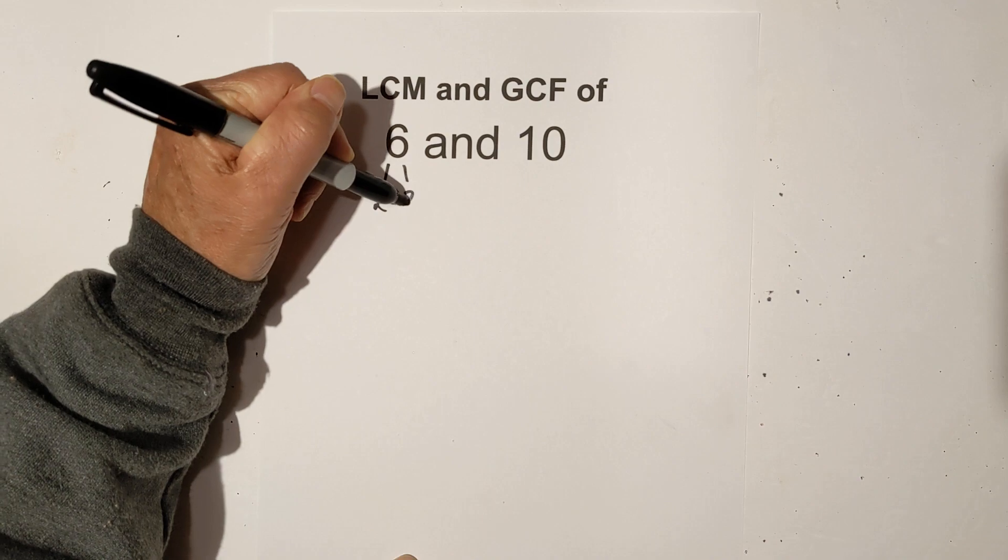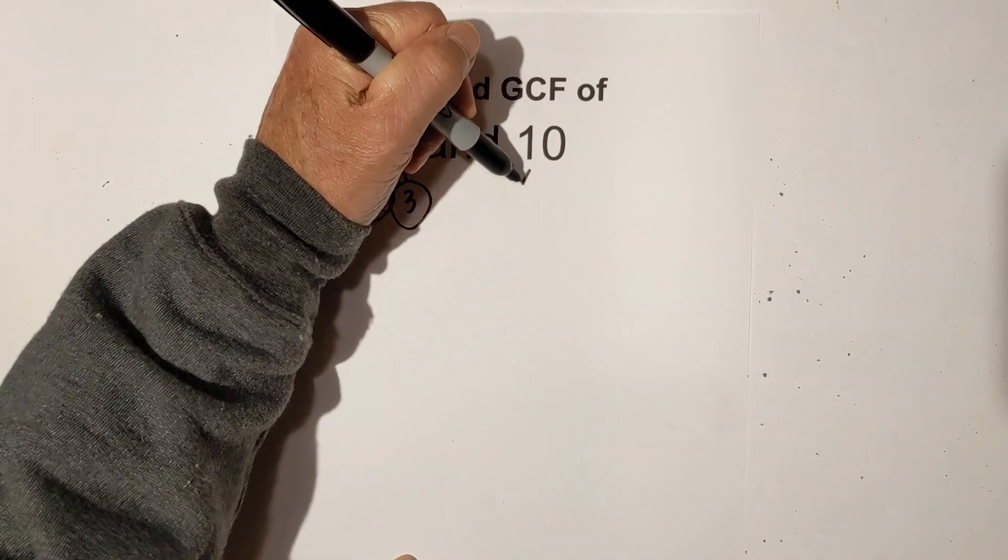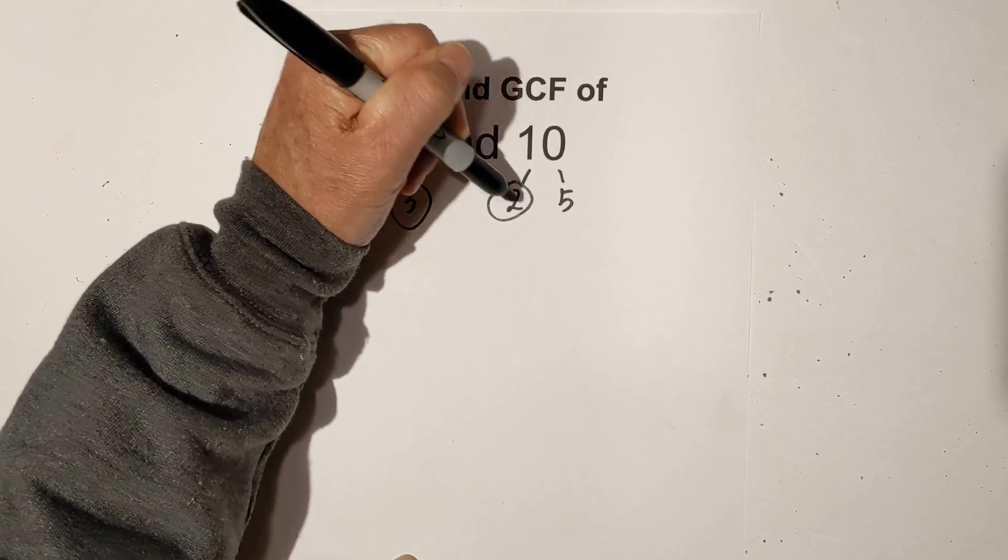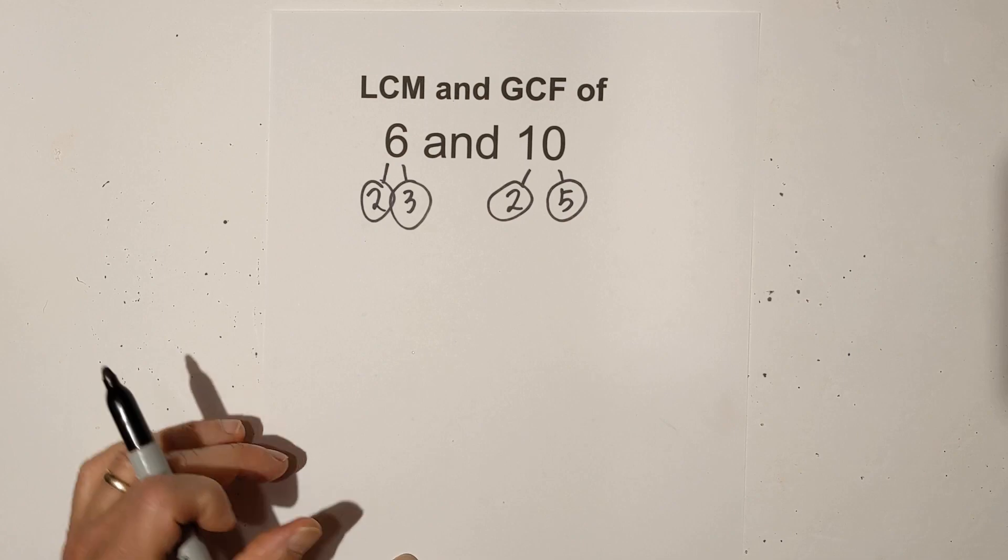First we have 2 times 3 is 6 and they're both prime numbers so I will circle them and then 2 times 5 circle both of these because they're prime. So I now have all the prime numbers of both numbers.